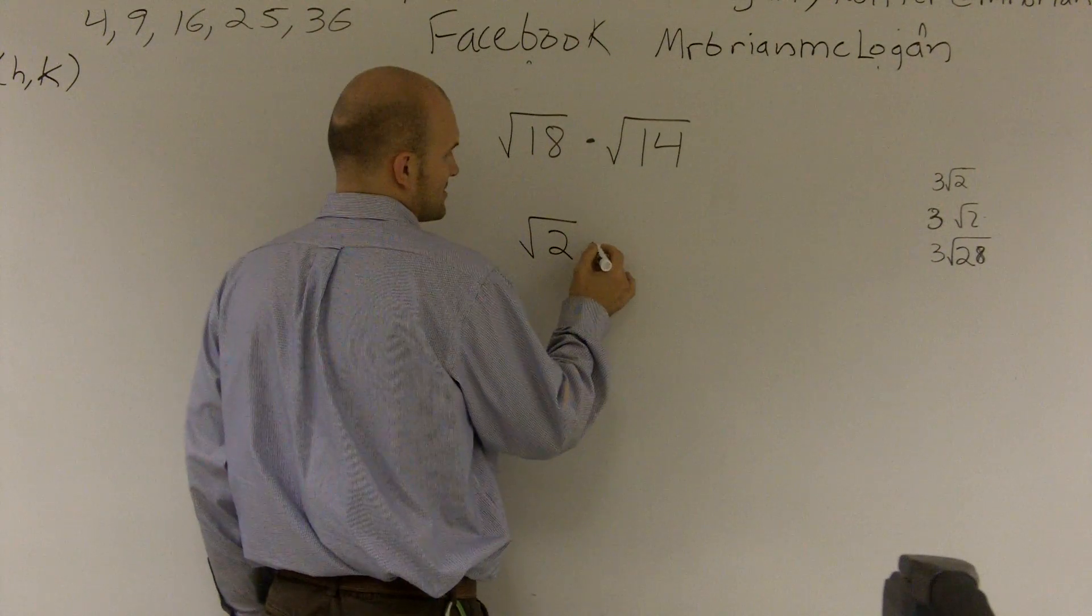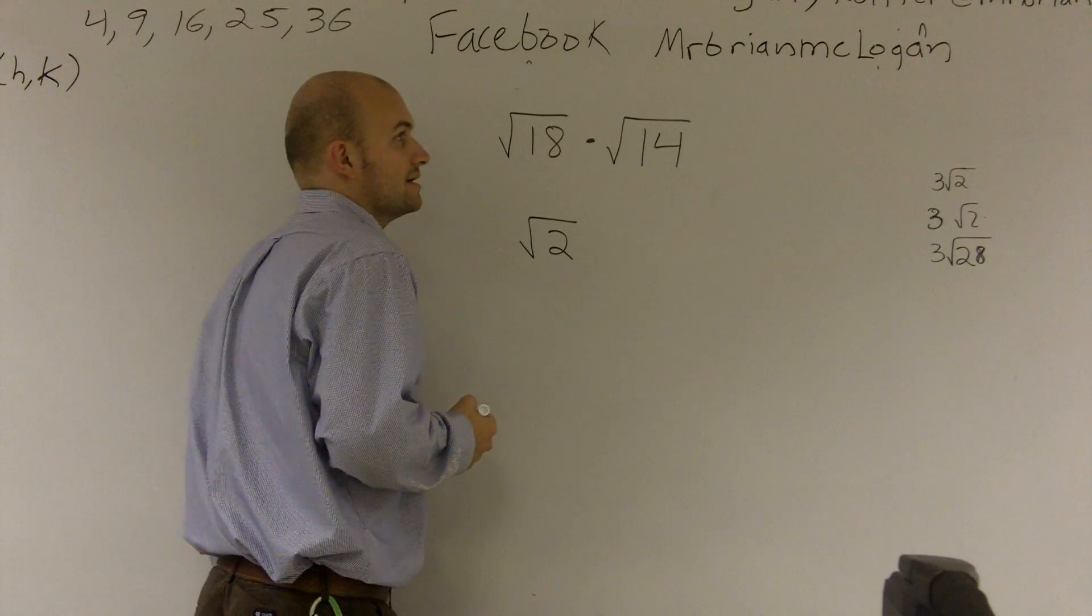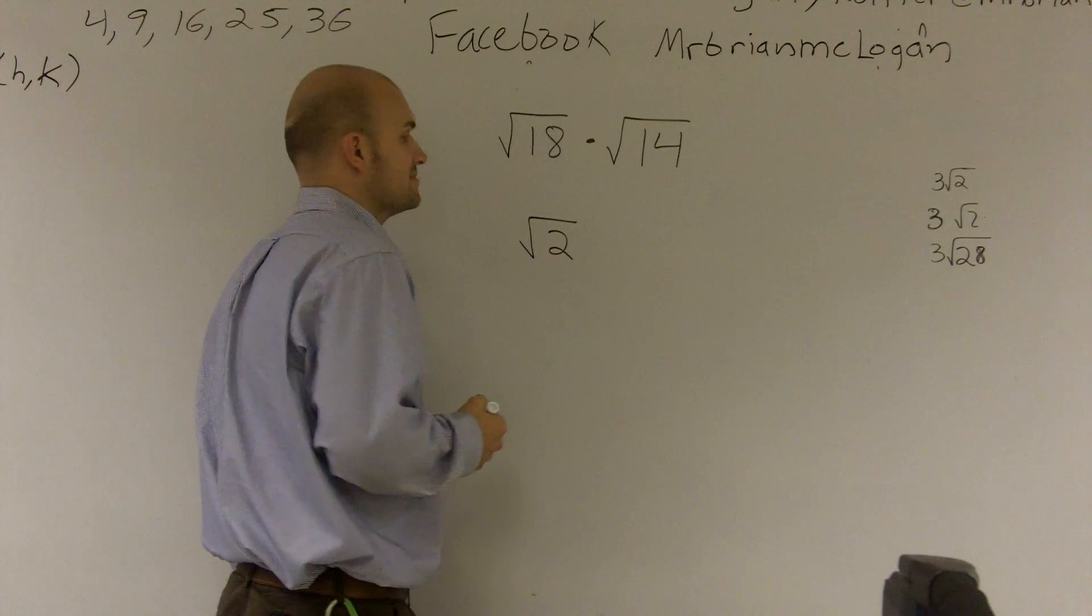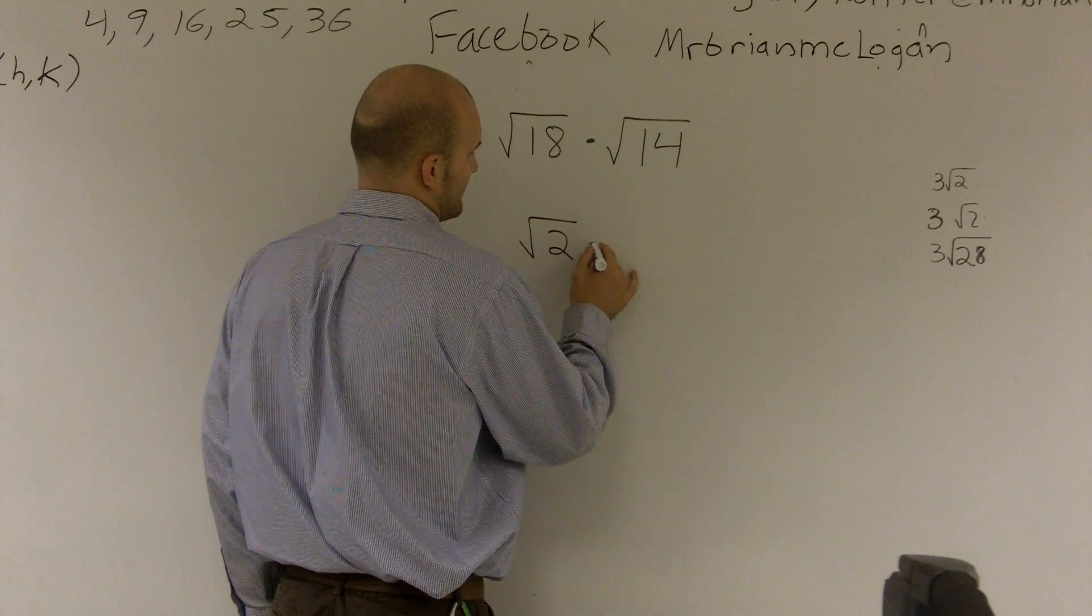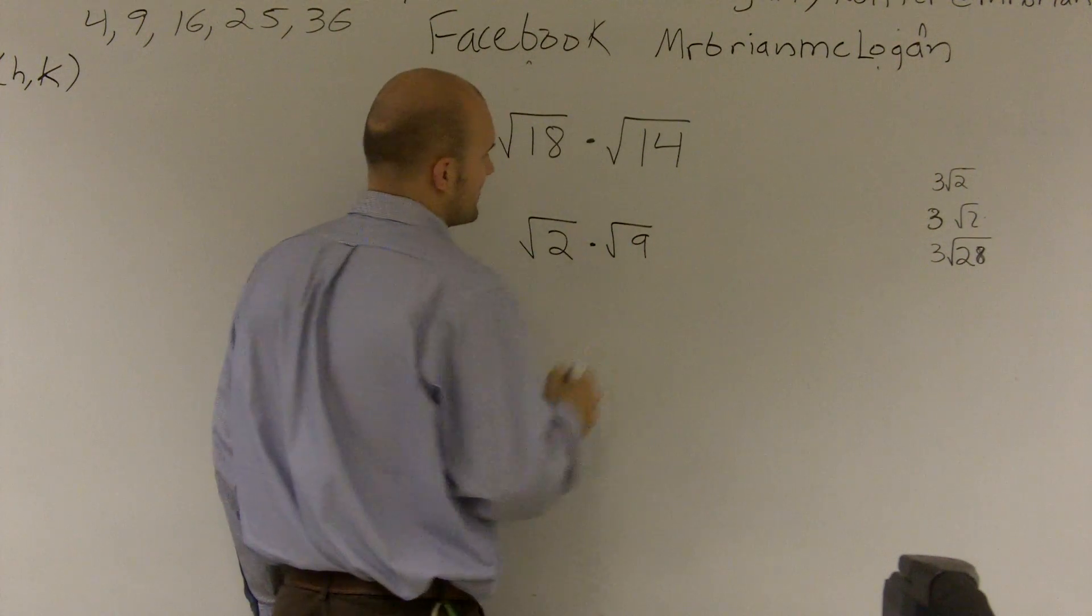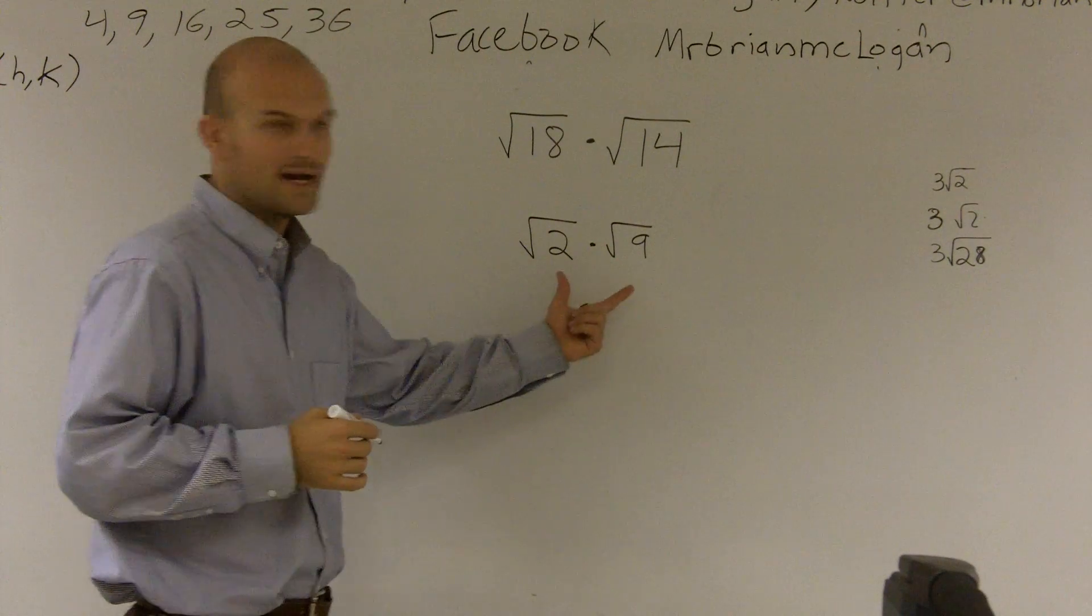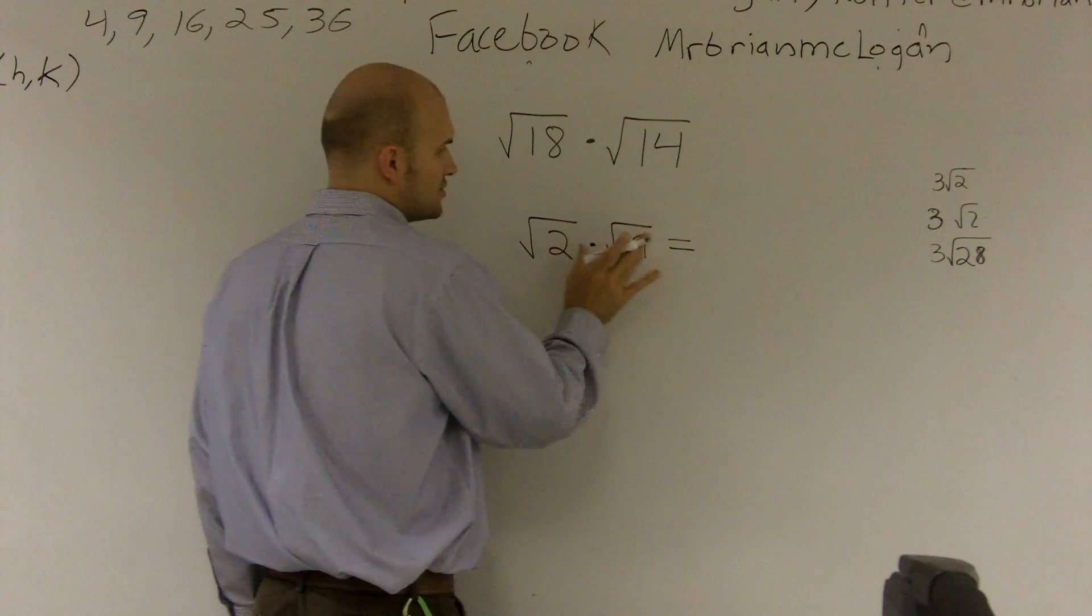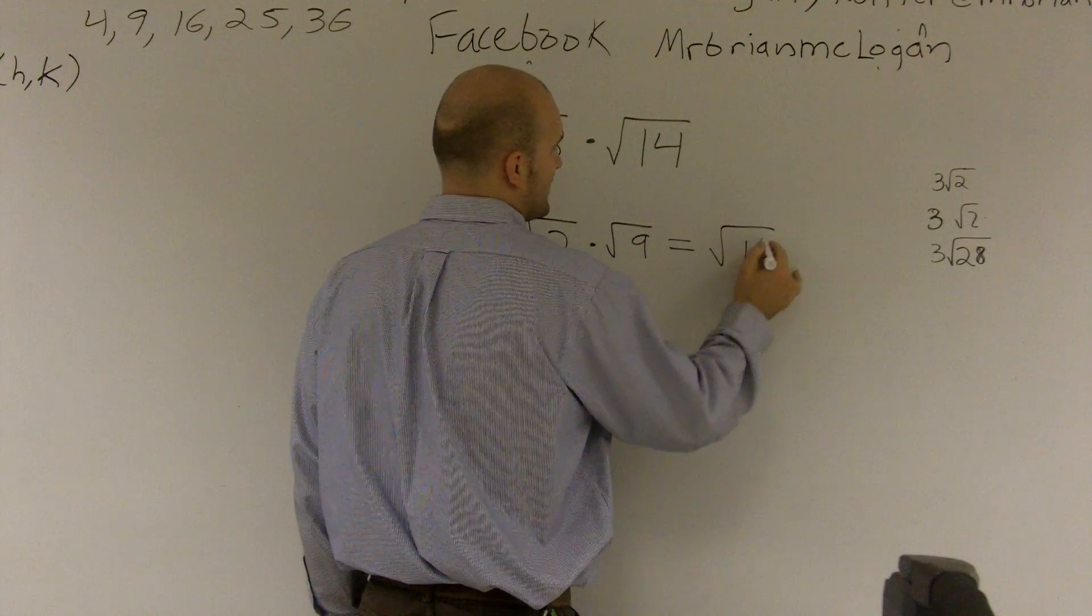Two times the square root of nine, well then I can multiply this and this would make sense. I multiply it, two times nine is going to give me the square root of 18. Then I can reduce this down and I'll do it two different ways.